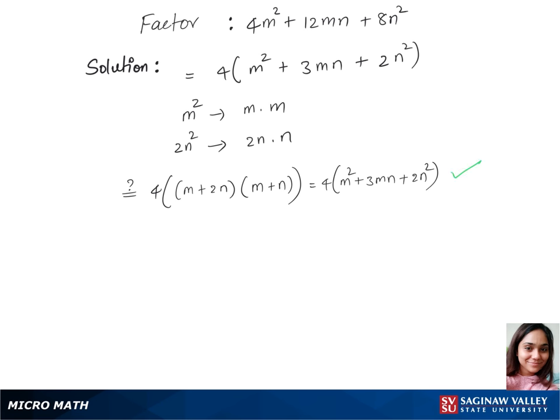So this is our answer. And the factors for the given question are 4 times m plus 2n times m plus n.